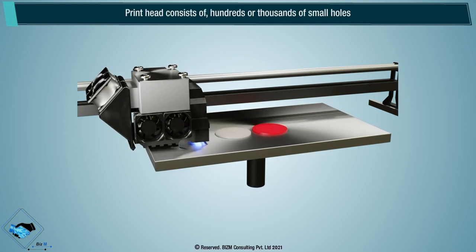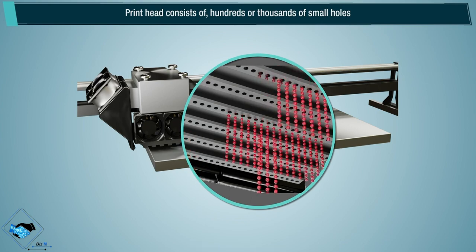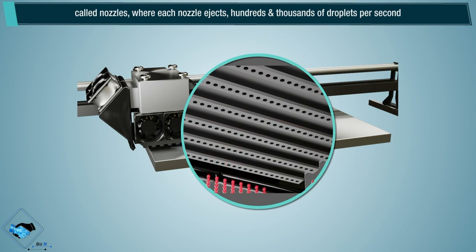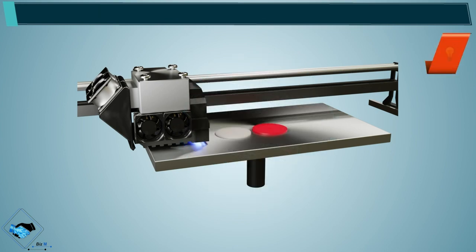Printhead consists of hundreds or thousands of small holes called nozzles where each nozzle ejects hundreds and thousands of droplets per second. Industrial printers normally have several printheads with each carrying tens of thousands of nozzles, each depositing very small droplets of 10 to 20 microns in diameter.